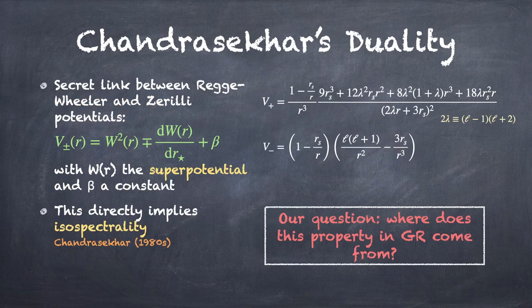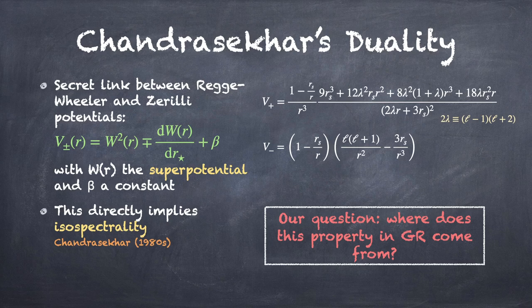But despite that, there actually turns out to be an underlying relationship between the two. They can both be derived from a single function, W(R), called the superpotential, as well as a constant. And so from this one function, you're able to generate both V_plus and V_minus. And it turns out that you get isospectrality from this because this implies a relation between even and odd solutions. And that relationship preserves the boundary conditions for isospectrality.